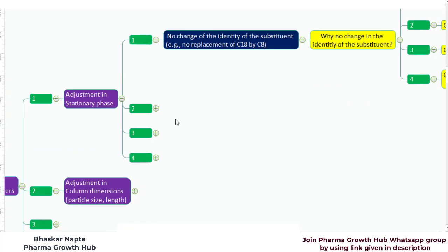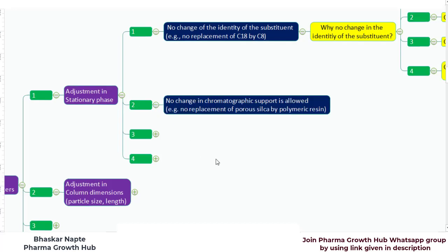When it comes to adjustment in stationary phase, point number 2 is: no change in chromatographic support is allowed. For example, if the monograph column specifies porous silica as the support material, you cannot change the support material to a polymeric resin for any reason.